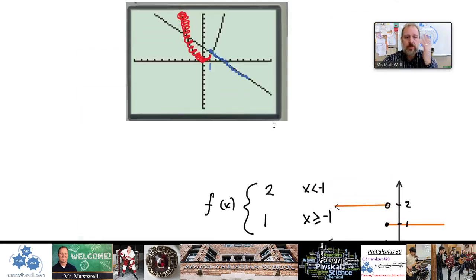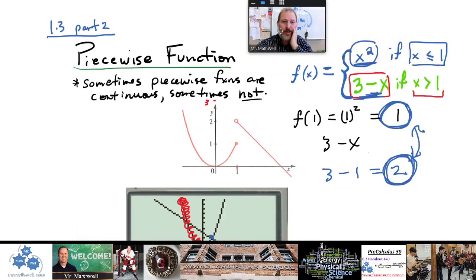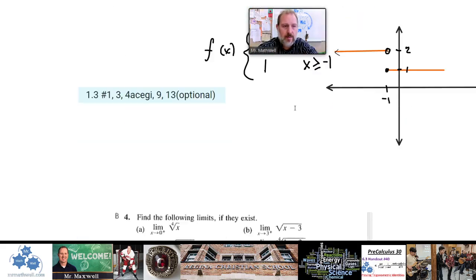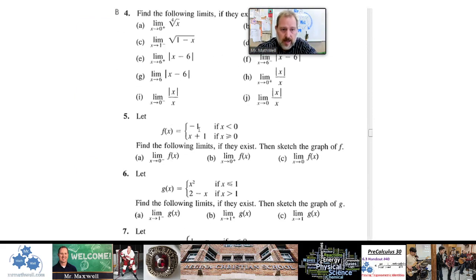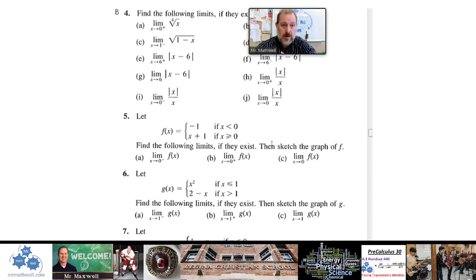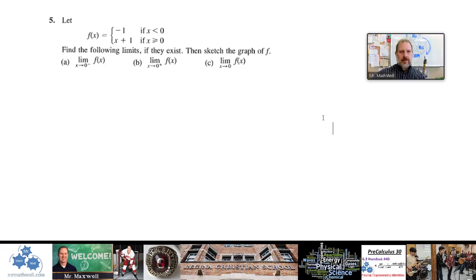That's the lesson on piecewise functions — fairly short. I just wanted to explain what they are. Now I'm going to do a question with you where you'll have to graph one. In assignment 1.3, look at number five — it's a pretty simple piecewise function where they ask about limits, left-hand limits, and right-hand limits. You can use a graphing calculator or Desmos, but let's do it from scratch with a table of values.